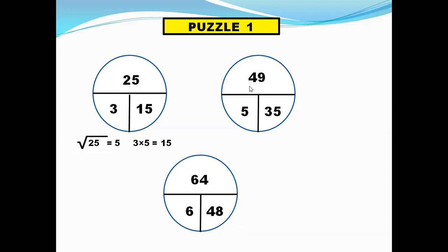Similarly 49, square root of 7. So 5 times 7 is 35. Now what is the square root of 64? It is 8. So we multiply 6 with 8, we get 48. So 48 is the answer.